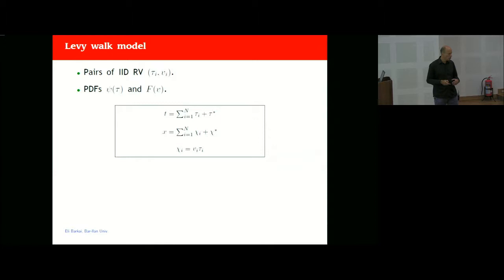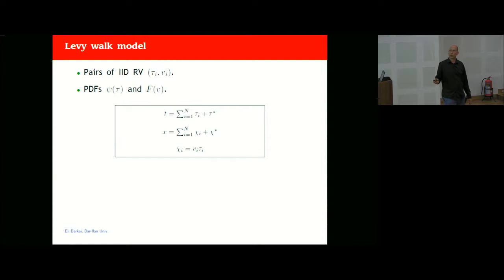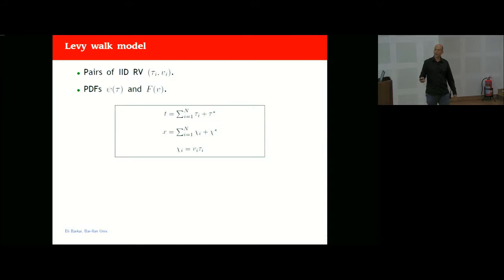Now we want to better characterize the far tails of these distributions using a simple stochastic model — the Levy-Walk. In this famous model you have pairs of independent identically distributed random variables: the flight time and the velocity of the particle in that flight. Two distributions describe these: the waiting time distribution (or flight time) and the velocity distribution. The measurement time is the sum of waiting times plus the last interval, and the position is a sum of displacements given by velocity times tau.